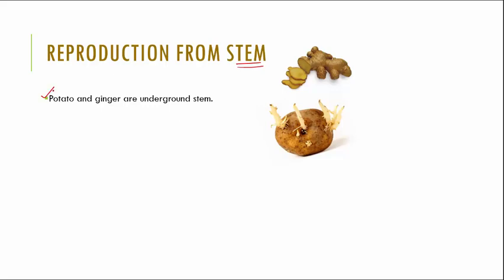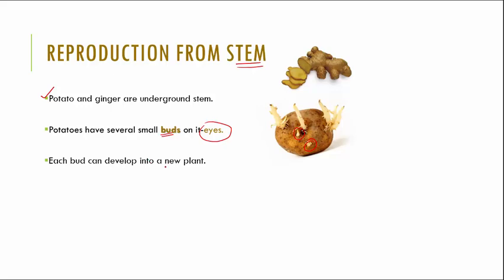Taking the example of potato and ginger, these are underground stems. You must have noticed that there are very small shoots that emerge from a potato or a ginger. If you have not, go to the kitchen and see it next time your mummy brings potatoes or ginger. You will observe that potatoes have several small buds on them which are called as eyes. Each bud can develop into a new plant — you pluck out one bud, put it into soil, and it can grow into a new plant.